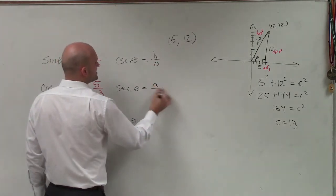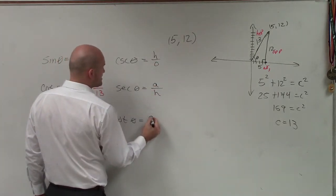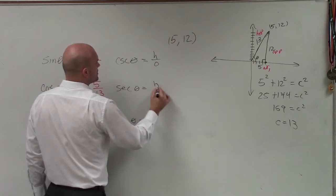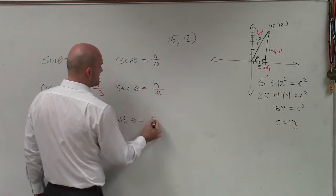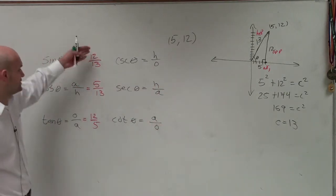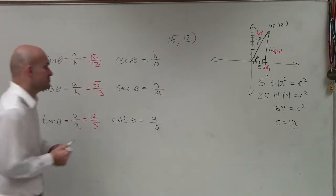So therefore, it's going to be hypotenuse over opposite. This is hypotenuse over adjacent. And this is going to be adjacent over opposite.